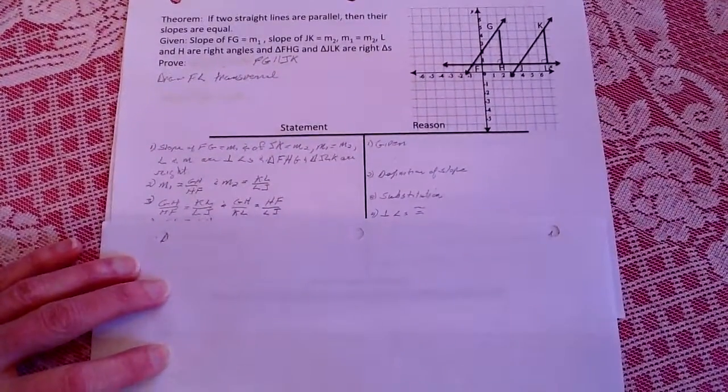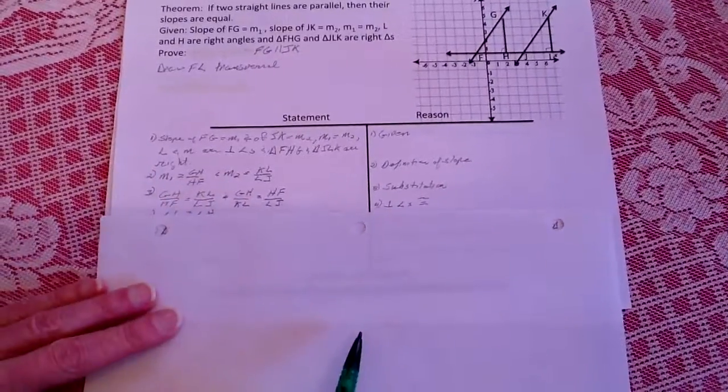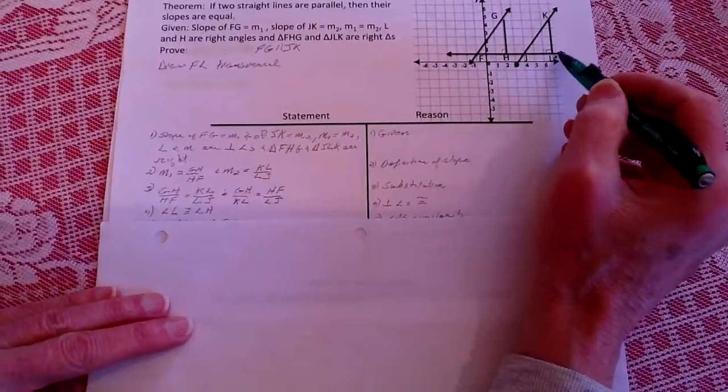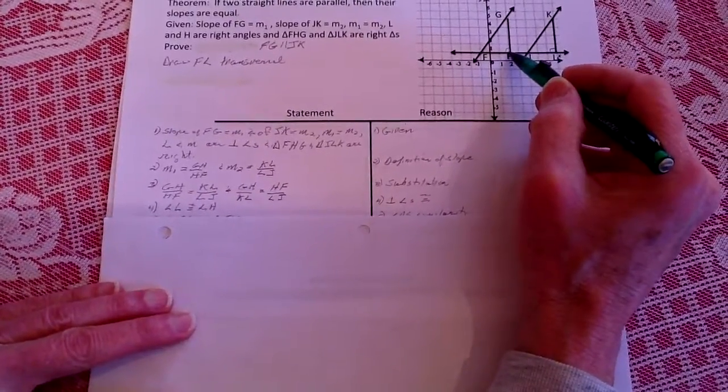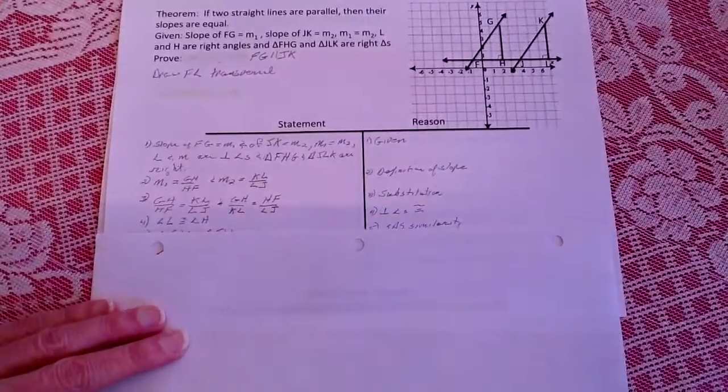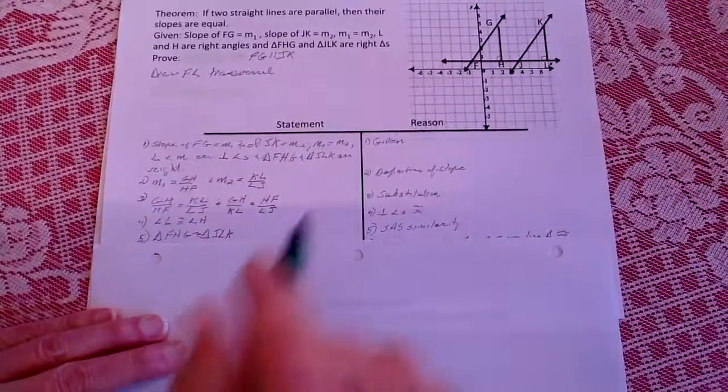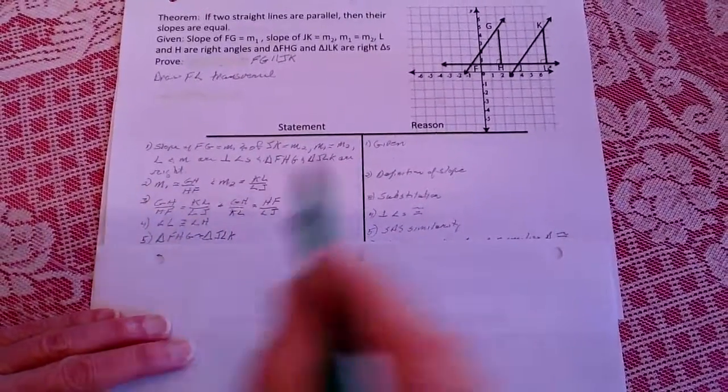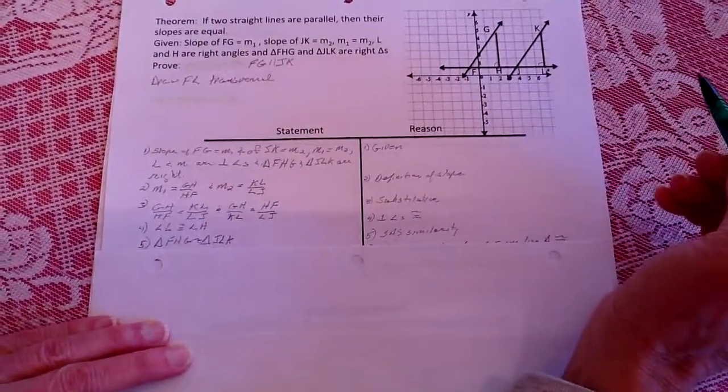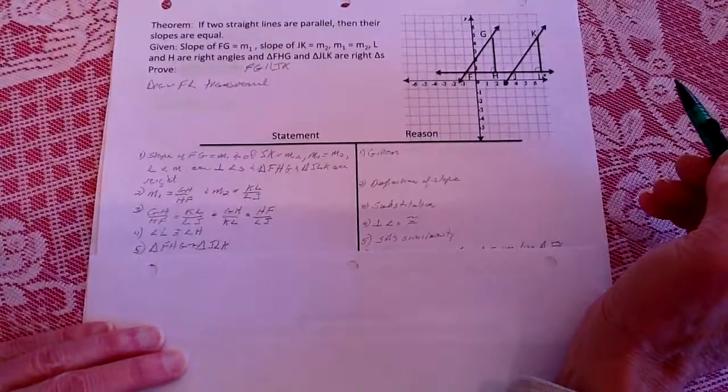And if I swap these denominators, then it's going to become GH to KL is going to be the same ratio as HF to LJ. And that's just substitution. We know that L and H are congruent angles because all perpendicular angles are congruent.